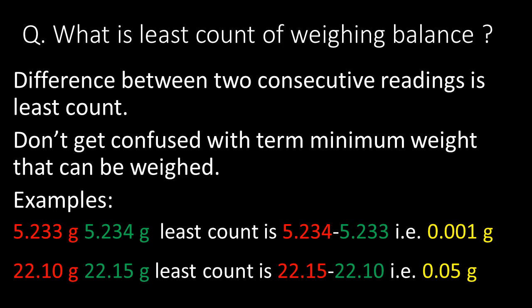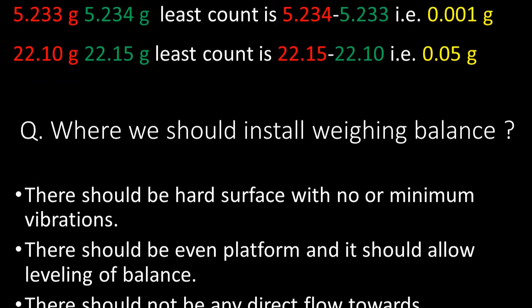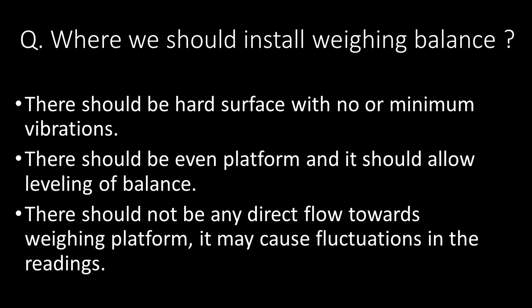You can pause this video and understand the second example as well. The second question is: where should we install weighing balances? The minimum requirements for weighing balance installation are given in USP chapters. The surface on which we install the balance should be a hard surface with no or minimum vibrations. There should be an even platform that allows leveling of the balance, and there should be no direct airflow towards the weighing platform, as it may cause fluctuations in readings.